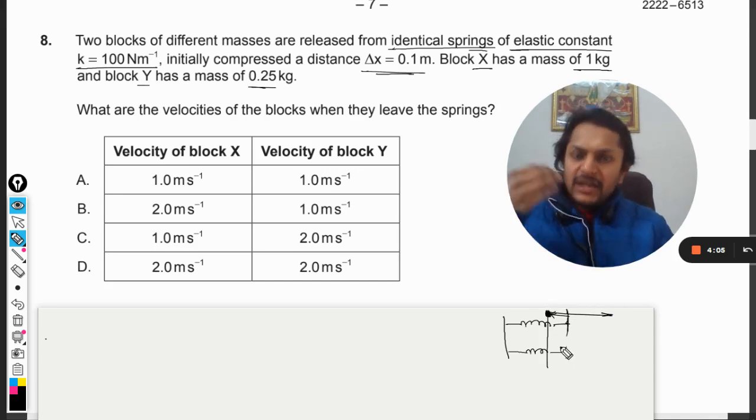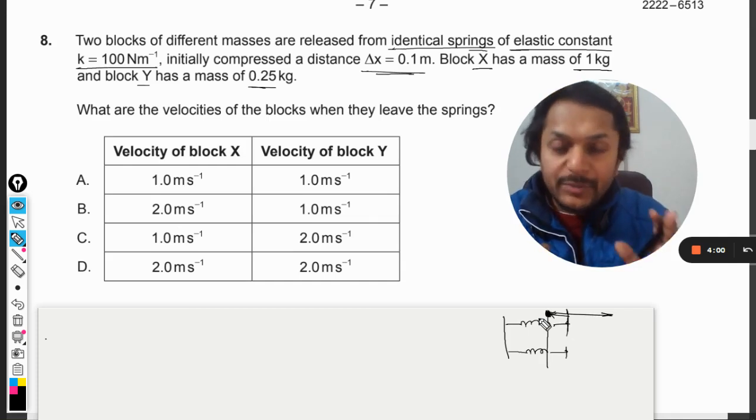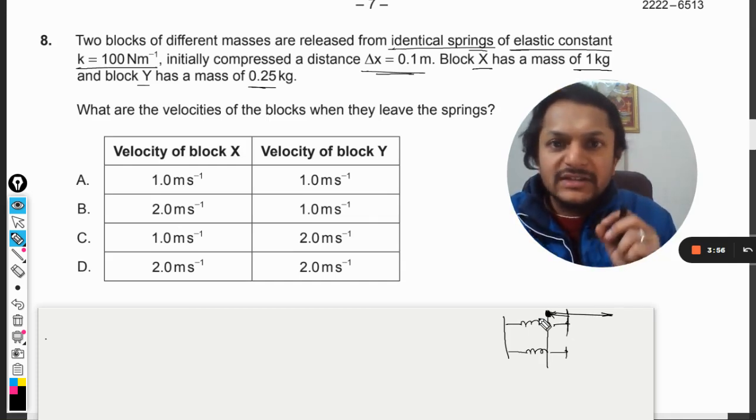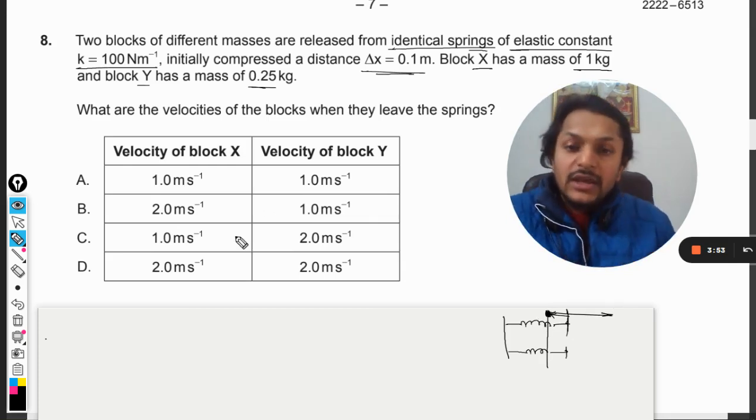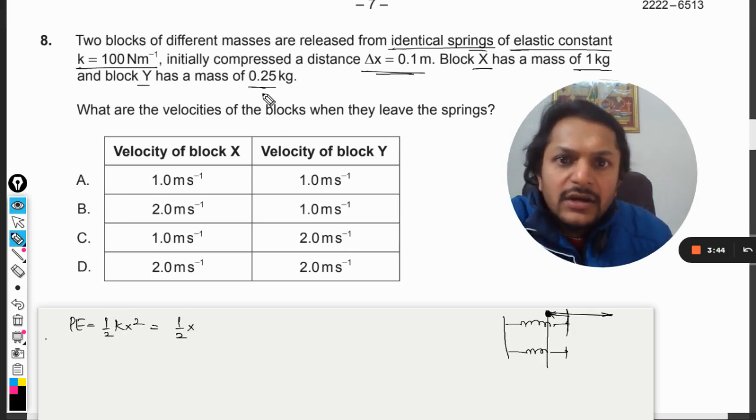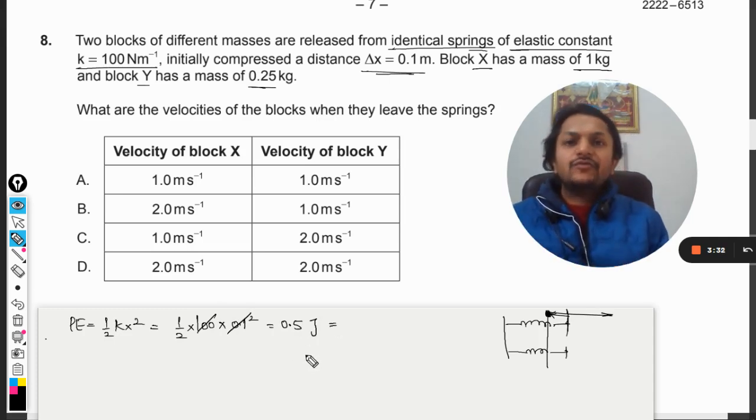We will be working according to the principle of conservation of energy. First, when the spring is compressed, delta x is 0.1, so what is the elastic potential energy? That will be half k x squared. The spring is the same in both cases, so it is 100 into 0.1 squared. This gets cancelled out, so it is coming out to be 0.5 joule. This is the energy stored in the spring in both cases.